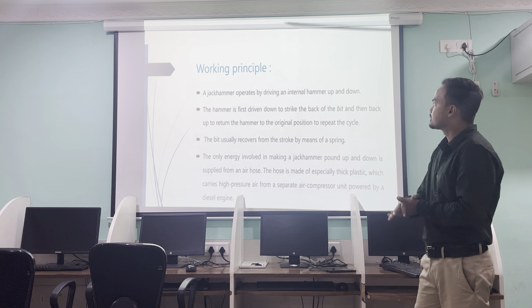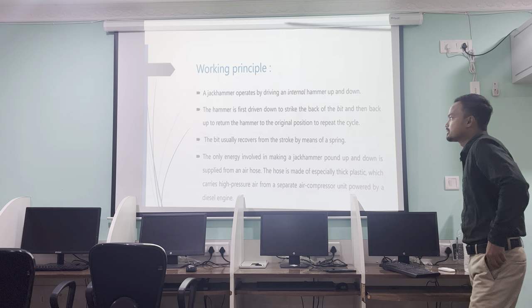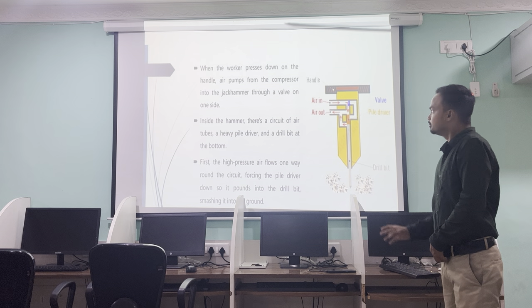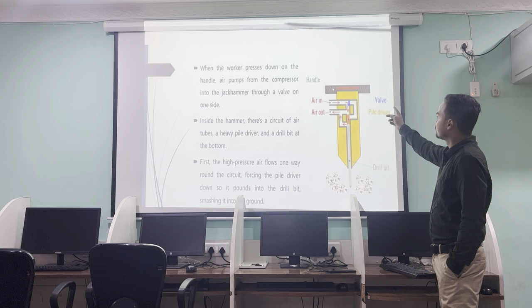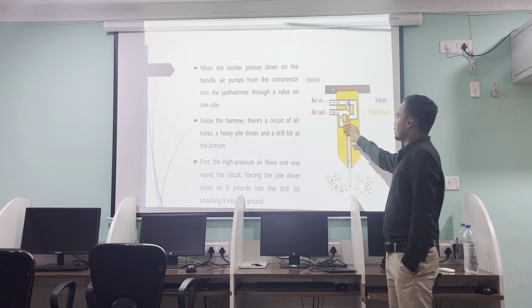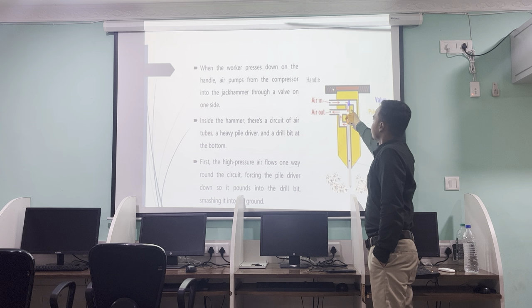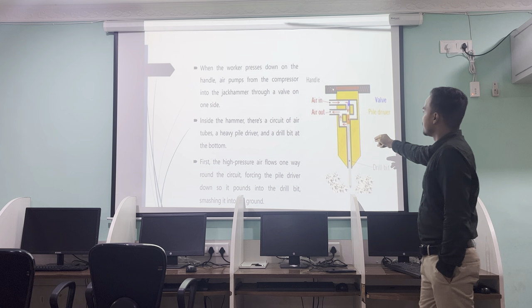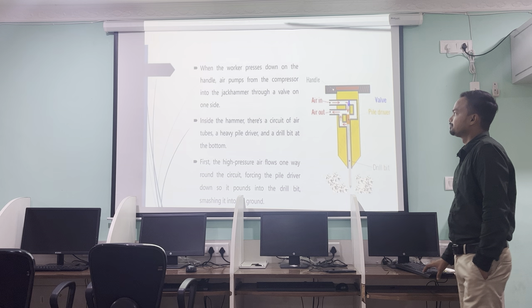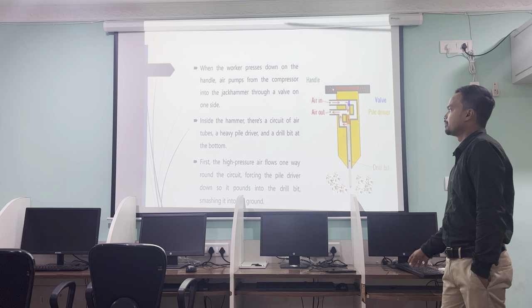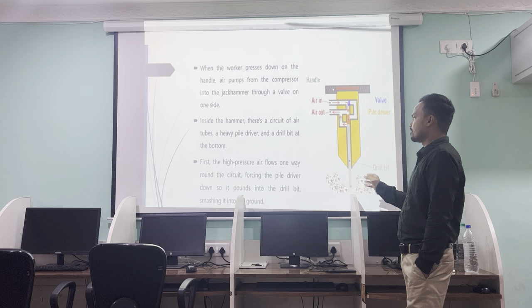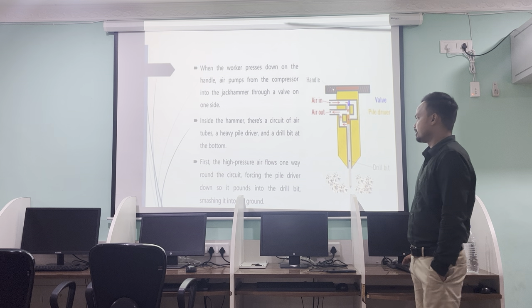Working principle of the jack hammer: a jack hammer operates by driving an internal hammer up and down. The hammer is first driven down to strike the bit, and then back to return to the original position, repeating the cycle. In the diagram you can see air-in and air-out valves, which are the file driver. When pneumatic air is constantly supplied toward the in position and returns to the air-out position, the hammer moves up and down, impacting the drill bit which then penetrates rock bolts, roof, or drainage system. Inside the hammer there is a circuit of air tubes, a heavy driver, and a drill bit at the bottom. High pressure air flows one way around the circuit forcing the driver down to the drill bit.